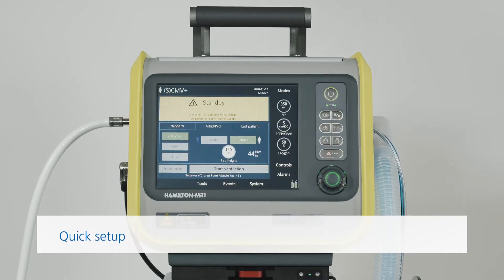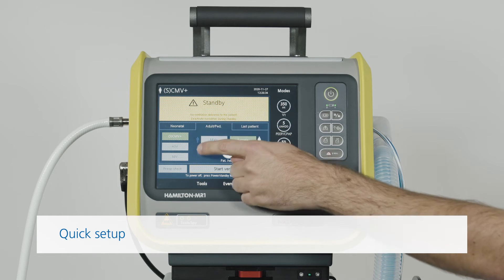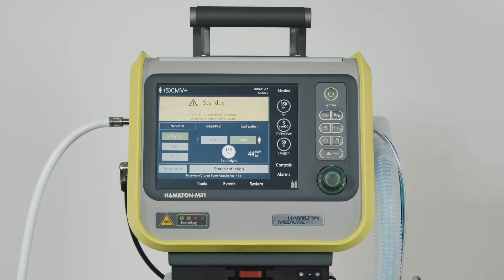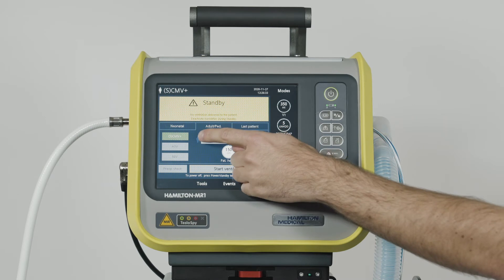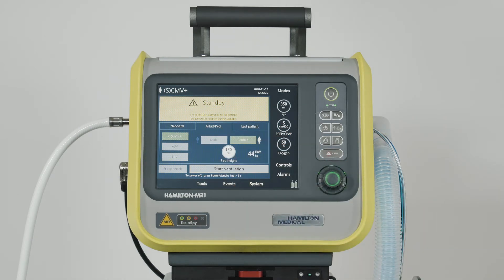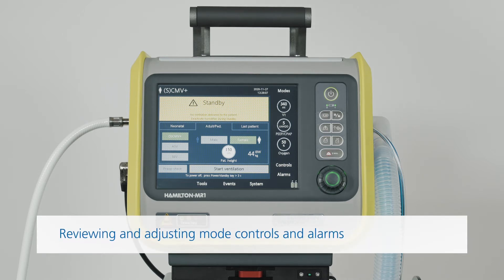For a new patient, you can pre-configure the ventilator quickly just by touching a quick setup button. Each quick setup defines which ventilation mode should be used and all the settings that are relevant for that mode. For each of the patient groups, you can define three different default configurations. Of course, you can always modify any of the settings if you have to.